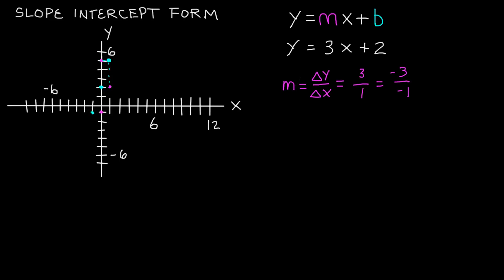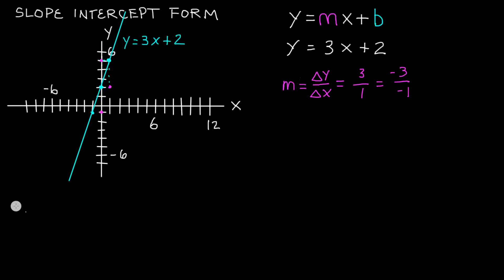So we simply connect the dots. Now we have sketched the line y is equal to 3x plus 2. Let's go ahead and do one more example.